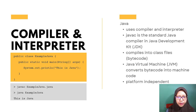Java, on the other hand, uses both a compiler and an interpreter. Java is a popular programming language created in 1995, owned by Oracle. Java works on different platforms and it is platform independent, meaning that you can write once and run anywhere.